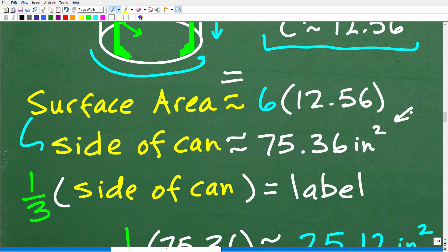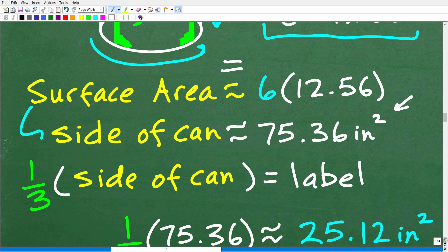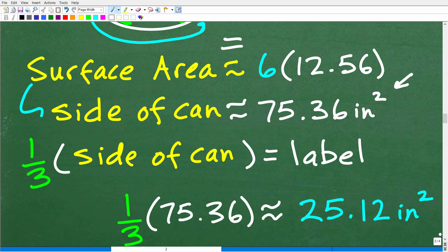So the surface area of the side of the can is approximately 75.36 inches squared. Don't forget about those units of measure squared. That's really important. And we know that our lovely label is only one third of the side of the can. So one third of the side of the can or the surface area of the side of the can is our label.